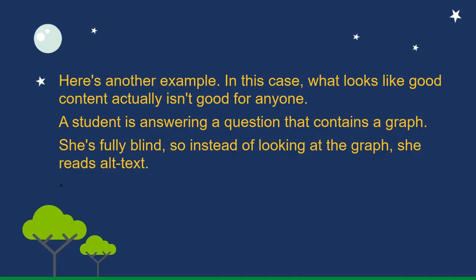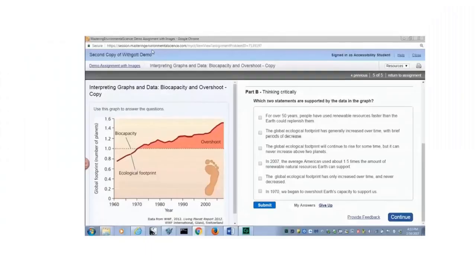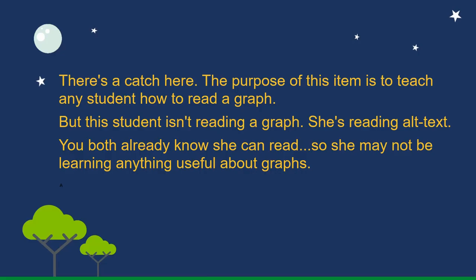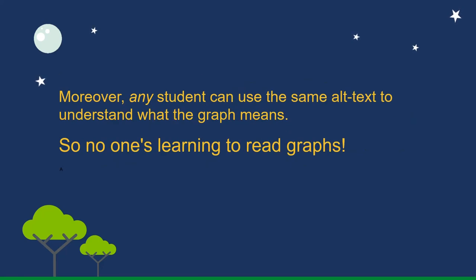Here's another example. In this case, what looks like good content actually isn't good for anyone. A student is answering a question that contains a graph. She's fully blind, so instead of looking at the graph, she reads alt text: 'Interpreting graphs and data. Bio-capacity and overshoot. Use this graph to answer the questions. The line graph showing how our global footprint on the y-axis has increased over time on the x-axis. The ecological footprint graph line shows an irregular but steady increase over time.' There's a catch here. The purpose of this item is to teach any student how to read a graph, but this student isn't reading a graph — she's reading alt text. You both already know she can read, so she may not be learning anything useful about graphs. Moreover, any student can use the same alt text to understand what the graph means, so no one's learning to read graphs.